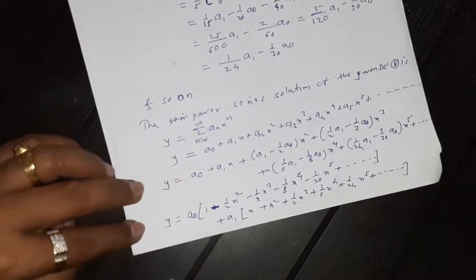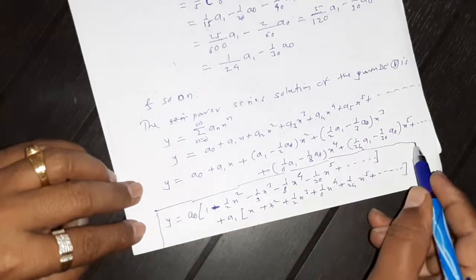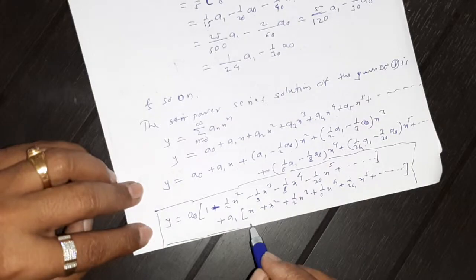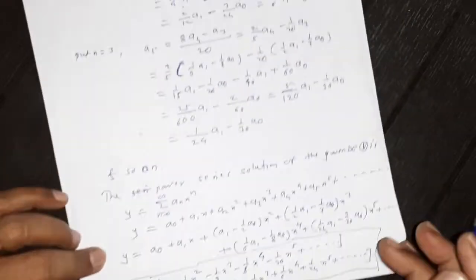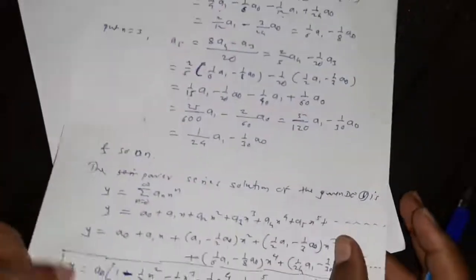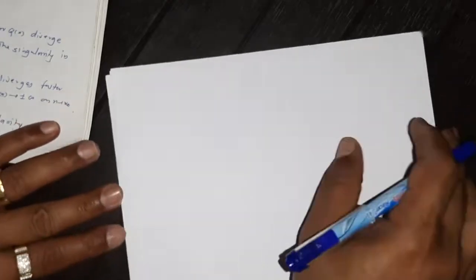So this is the final answer — this is the power series solution of the given differential equation. This is the second example of the topic: ordinary points and singular and non-singular points.